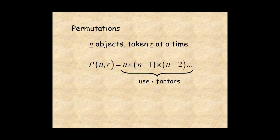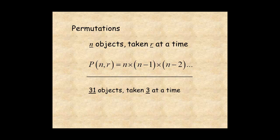For example, the number of permutations of 31 things taken 3 at a time is 31 times 30 times 29.